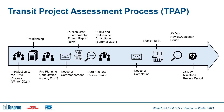Once the notice of commencement is issued and the report is published, this starts the official 120-day review period, where the draft EPR will be reviewed by the public and stakeholders. During this period there will be another public consultation. The 120-day review period will end with a notice of completion and the final EPR will be published, which will reflect the outcomes of the review process and any changes that were made as a result. There will then be a 30-day review objection period followed by a 35-day review by the provincial minister.